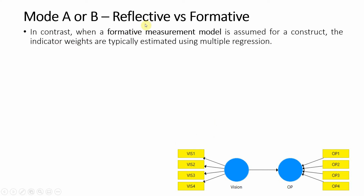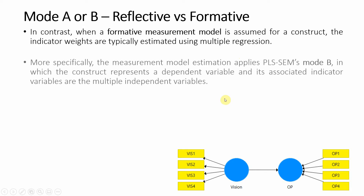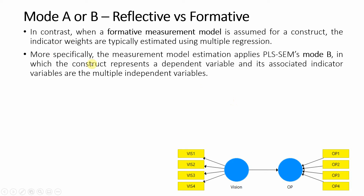In contrast, when a formative measurement model is assumed for a construct, the indicator weights are typically estimated using multiple regression — because these indicators are influencing the dependent variable. More specifically, the measurement model estimation applies PLS-SEM's Mode B when your measurement model is formative. In Mode B, the construct represents a dependent variable.